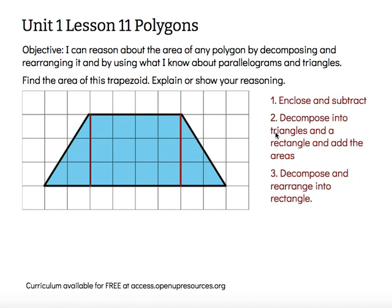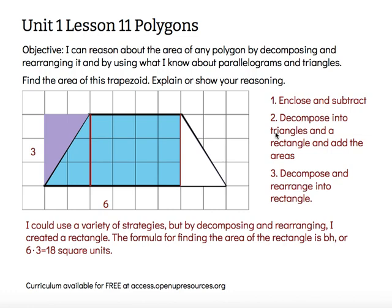I could also decompose and rearrange into a rectangle. I've already decomposed this into two triangles and a rectangle. I can take one of those triangles, rotate it, and place it over on the left instead — now I just have one large rectangle. I'll count the units for the base: there are six units across and the height is three. So the area of that rectangle, created by decomposing and rearranging the trapezoid, is 18 square units.